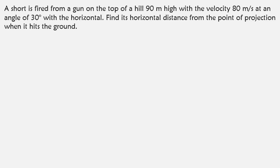All right, so hi guys, we have this question. It takes a projectile motion, so the question reads: a shot is fired from the top of a hill 90 meters high with a velocity of 80 m/s at an angle of 30° with the horizontal. Find the distance from the point of projection when it hits the ground.